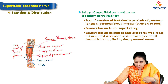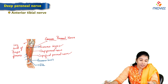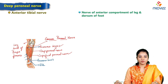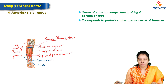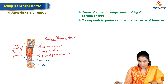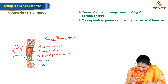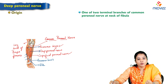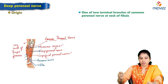The deep peroneal nerve is also called the anterior tibial nerve. It supplies the anterior compartment of the leg and a small part on the dorsum of the foot. It corresponds to the posterior interosseous nerve in the upper limb. It is one of the two terminal branches of the common peroneal nerve, given off at the neck of the fibula.